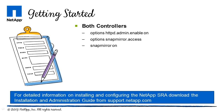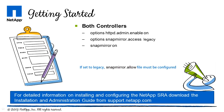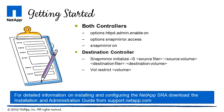Options snapmirror.access should be set to asterisk to allow all hosts, or legacy. If you set it to legacy, the snapmirror.allow file must be configured. Use the following as an example to create your SnapMirror on your destination controller. With NFS volumes, turning no-snapdir on prevents SRM from scanning the .snapshot directory in the datastore on recovery.